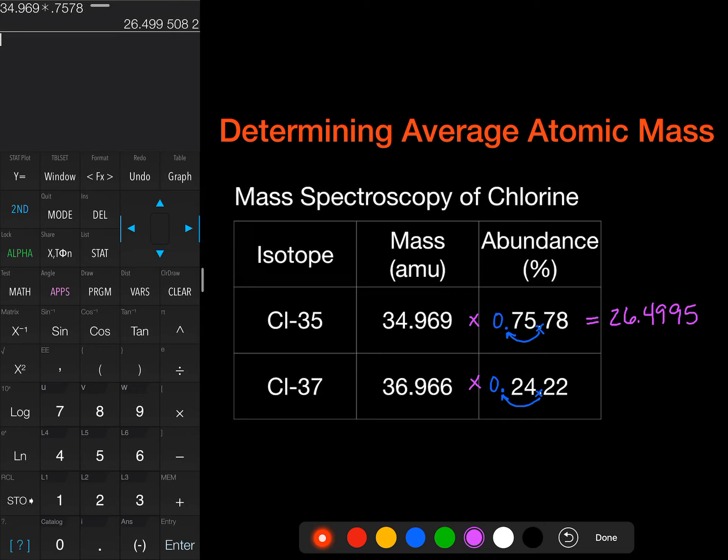And then we have 36.966 times 0.2422, and we get 8.9531.